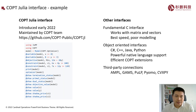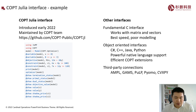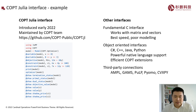Now let's come to the Copt Julia interface. It was introduced in 2022, and we have already noticed that many users have adopted it. It is maintained directly by the Copt team. You can access its source code in our GitHub repository. Here I include an example of modeling using the Copt interface. Of course, Copt also has other interfaces — for example, the C interface, some object-oriented interfaces, and some third-party connections.